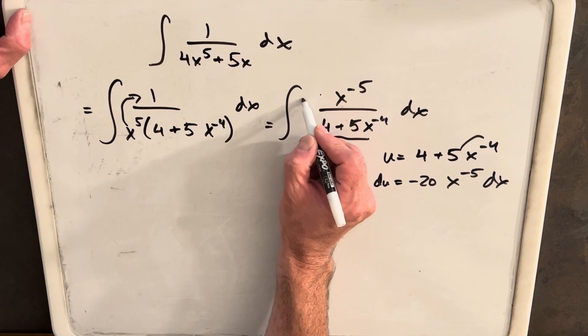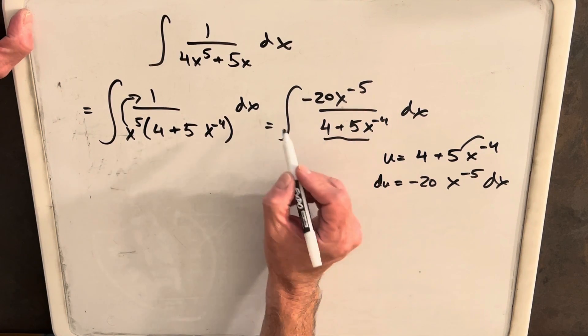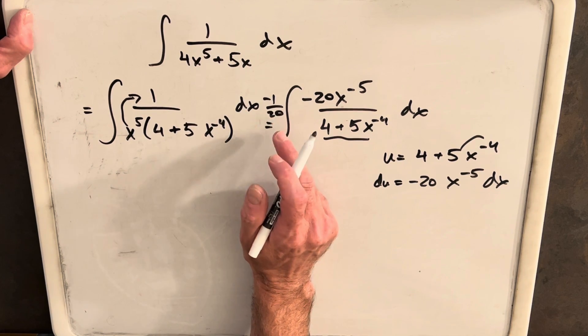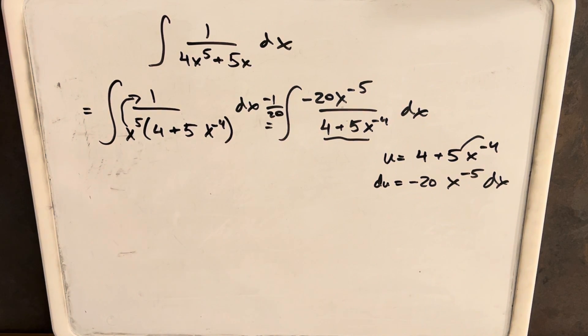We just need a minus 20. So let's create that. And then we'll have to divide that out though so that we're not changing the expression. So we'll just multiply by a 1/20th here. And then we're essentially multiplying by 1.